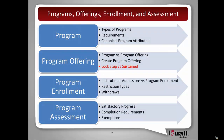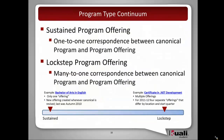We need to talk about lockstep versus sustained programs. A sustained program offering has a one-to-one correspondence between the canonical program and the program offering. Typically our undergraduate programs operate this way. The example on the continuum at the bottom is the Bachelor of Arts in English — we tend to have only one offering of that, although there may be specializations within it like creative writing, poetry, et cetera.